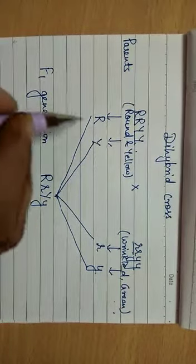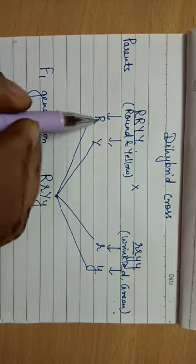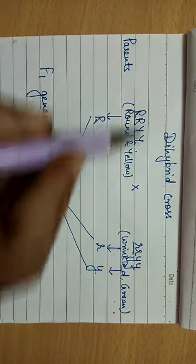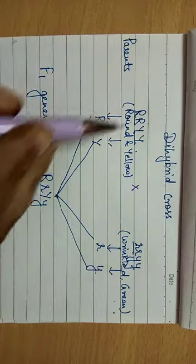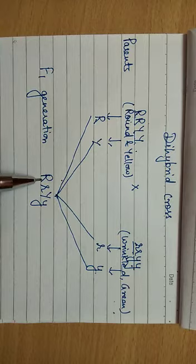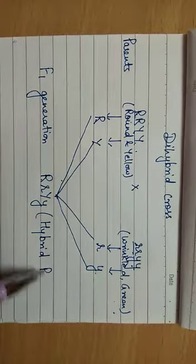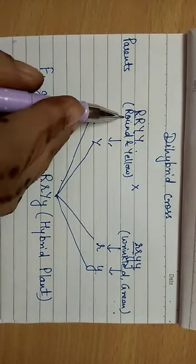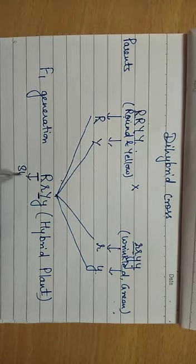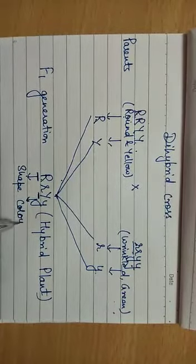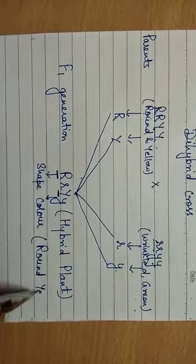We have taken only one capital R out of these two, meaning we are taking 50% of the genes from the parents — one capital R from here, one small r from here, one capital Y from here, and one small y from here. That means 50% of the genes are transferring to the F1 generation. So this is a hybrid generation or hybrid plant which resembles the dominant parent because it consists of one dominant gene for shape as well as for color. The plant we get in F1 generation will be round and yellow.